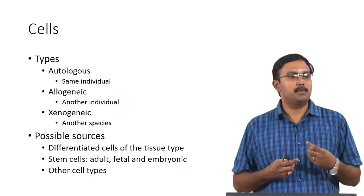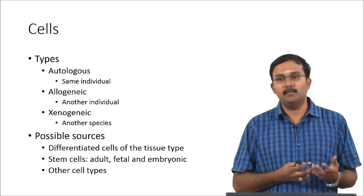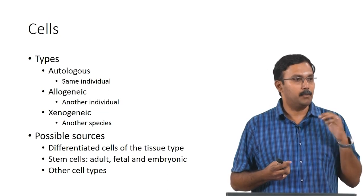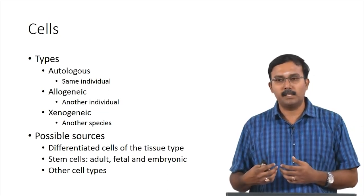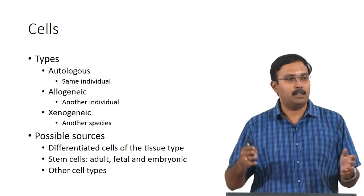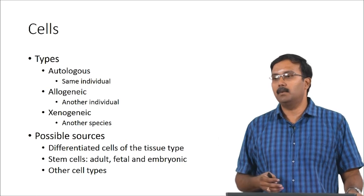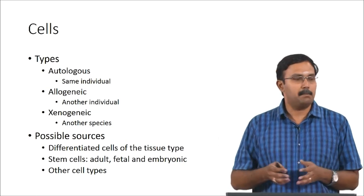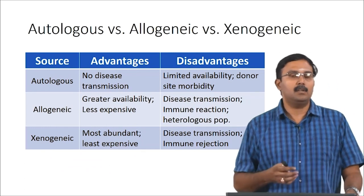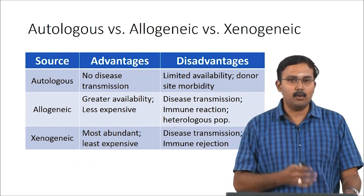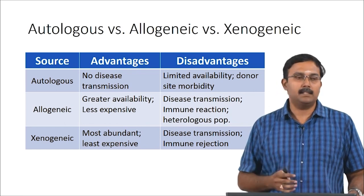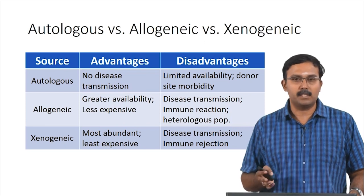There are also studies where people have shown that one type of cell can be converted to another type of cell — even if it is a somatic cell — without actually taking them to the pluripotent state. You could just trans-differentiate them from one type to another. With respect to autologous cells, the biggest advantage is there is no risk of disease transmission or immune rejection.